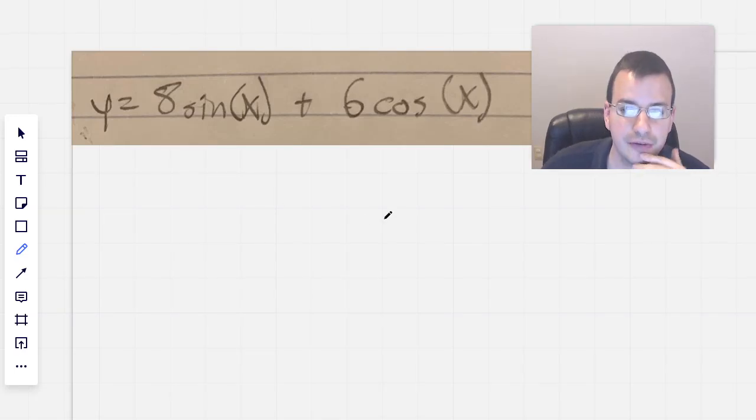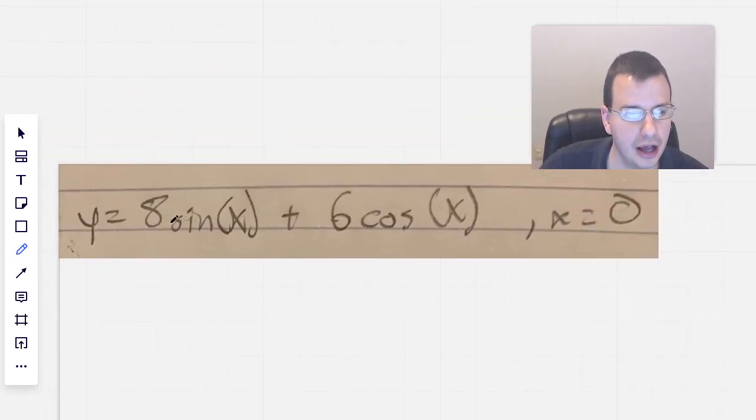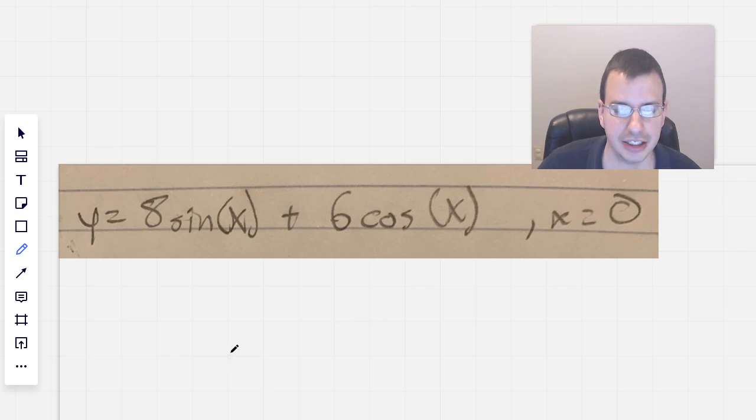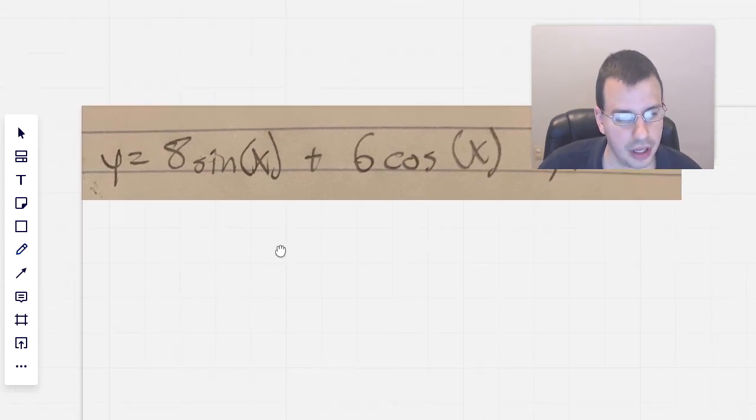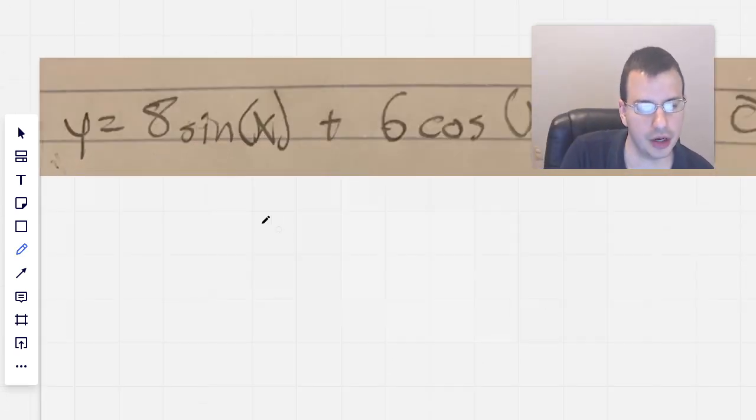So we want to find an equation for the tangent line of this equation at x equals 0. First thing we're going to do is write up the equation for tangent line.